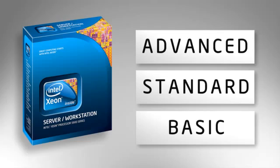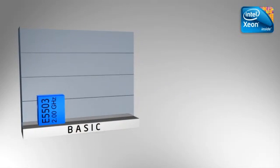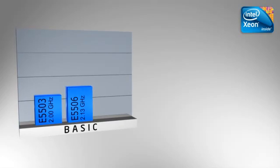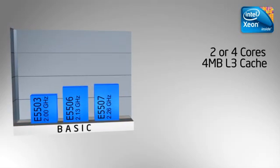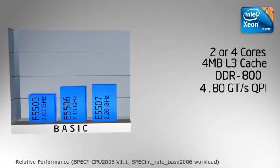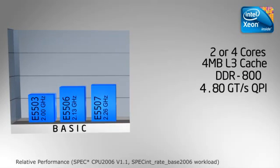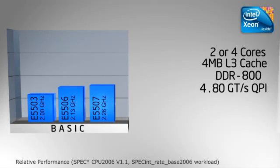Each segment includes specific features and technologies that deliver the right balance of performance and cost to the targeted end user. The Intel Xeon processor 5500 series makes up the basic segment. With two or four cores and four megabytes of L3 cache, these processors deliver low-cost, entry-level performance for lighter workloads such as file, print, and smaller database or low-load web servers.